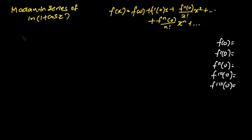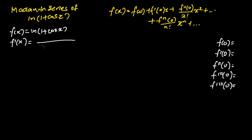The first step is to express f(x) as ln(1 + cos x). After which we differentiate f(x) once. We get: in the denominator, 1 + cos x, and in the numerator, negative sin x.